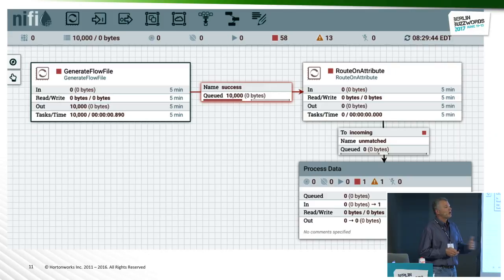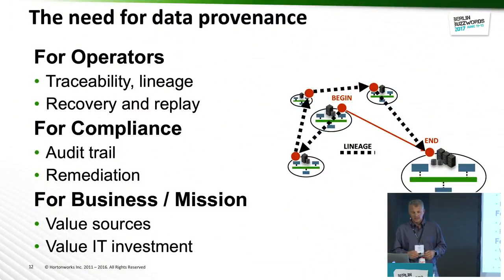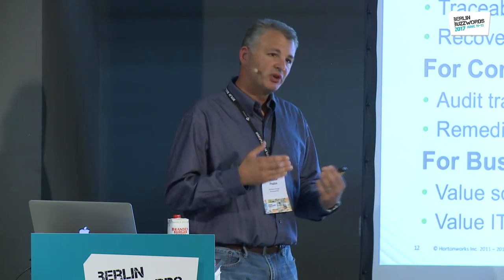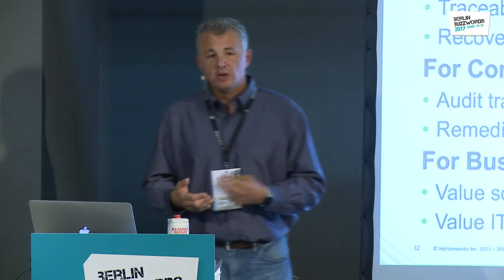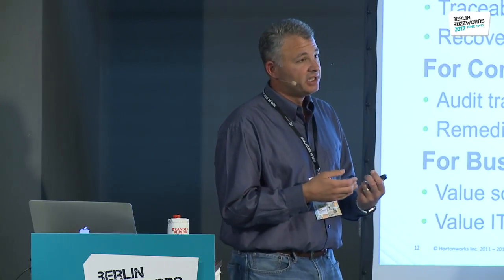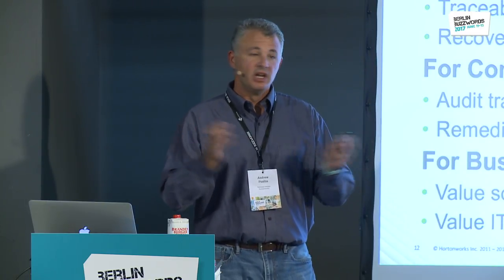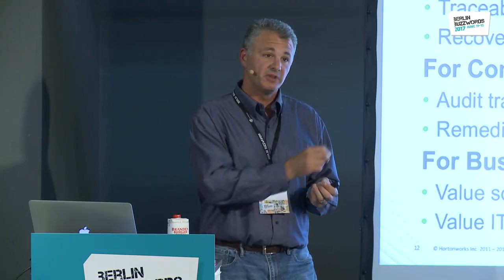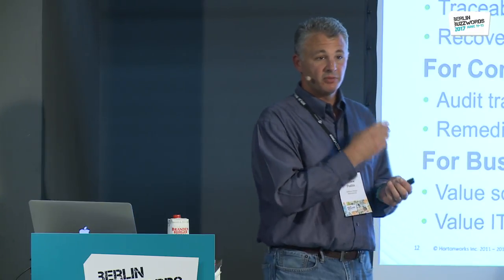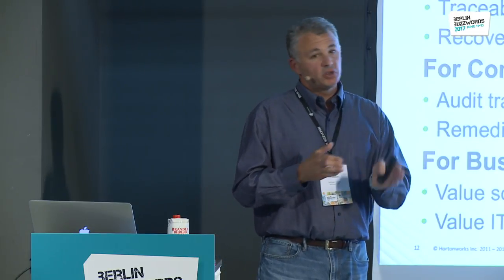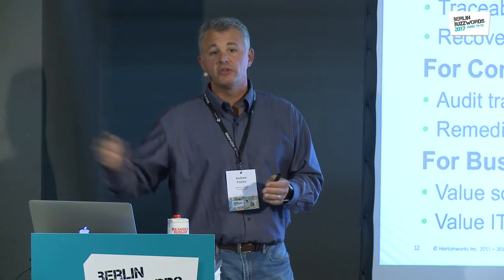Data provenance is often thought of as just lineage — understanding where things were and the path through something — but it provides a lot more than that. You get traceability for operators and for compliance: a complete chain of custody and understanding of every change to a piece of data. If you're moving data across countries where certain data is not allowed to leave a country's boundaries, provenance provides the audit that that never happened.